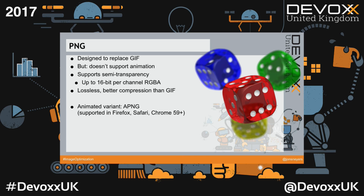Then there is the PNG file format, which was designed to replace GIF, mostly because of patent issues with GIF. It does a really good job replacing GIF: it offers better compression, support for semi-transparency and full color. But it doesn't support animation, which is probably the only reason GIF is still around today. There is an animated variant of PNG called APNG, supported in Firefox, Safari, and Chrome — so it is starting to become more of an option.